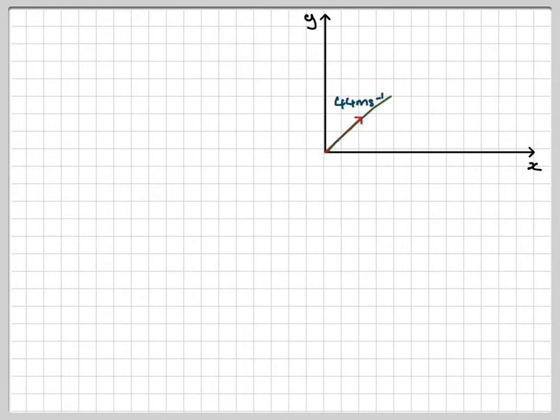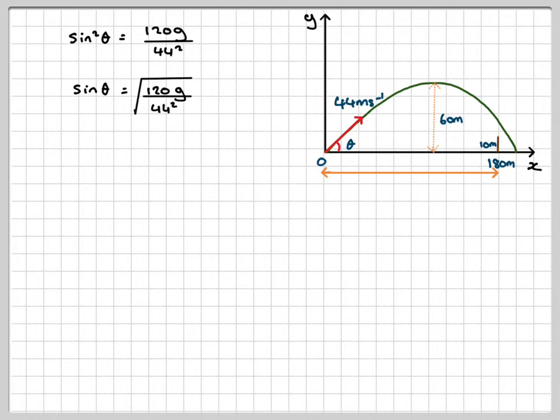So sin theta will be equal to the square root of that. Theta will be sin to the minus 1 of the square root, positive square root of that, and we work that out, we're going to get that the angle would have to be 51.204 degrees.